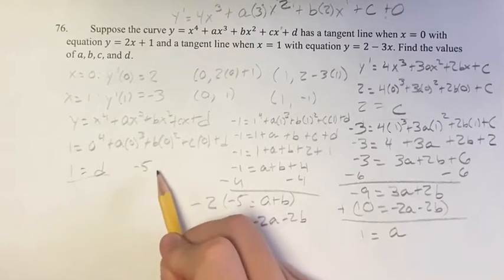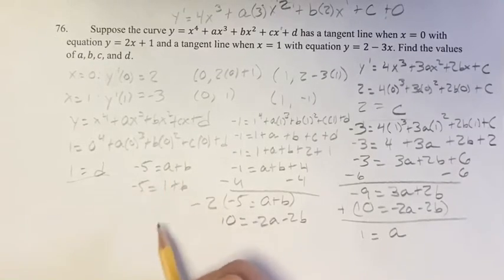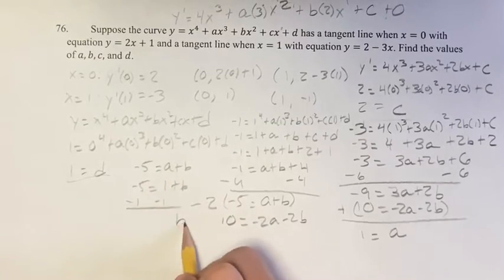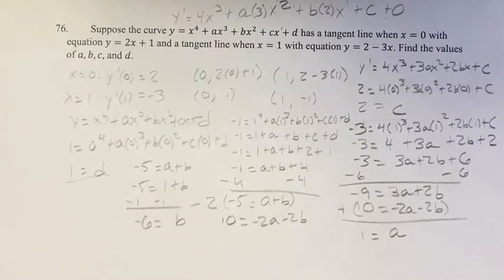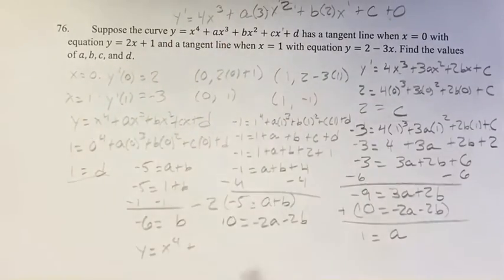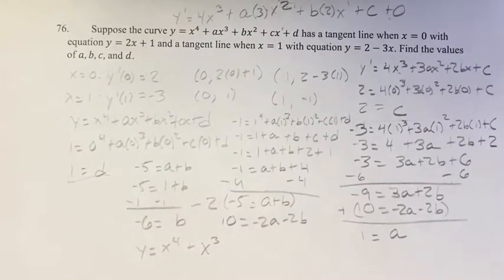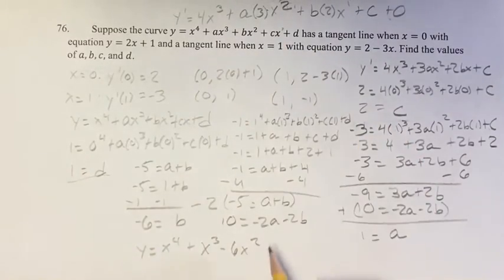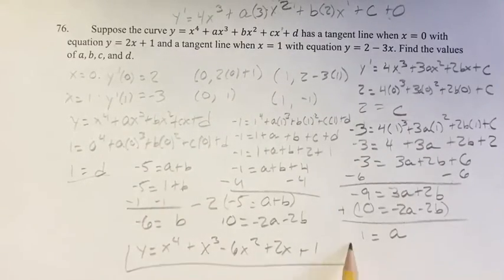Now we have three constants and just need to solve for b. We know that a plus b equals negative 5, so negative 5 equals 1 plus b, and subtracting 1 from both sides gives b equals negative 6. Therefore our final equation is y equals x to the 4th plus x cubed minus 6x squared plus 2x plus 1.